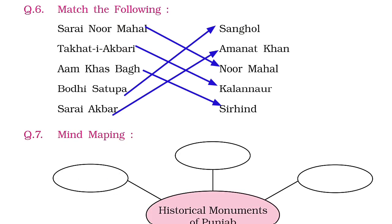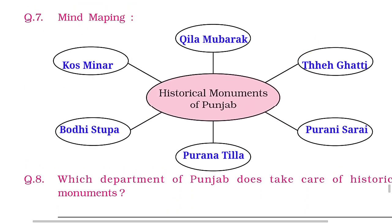Matching continued: Aam Khas Bagh — Sirhind; Bodhi Stupa — Sanghol; Sarai Akbar — Amanat Khan. Now let's do mind mapping. We have to name the historical monuments of Punjab: Kila Mubarak, Dhegati, Pran Sarai, Prana Tila, Bodhi Stupa, and Kos Minar.